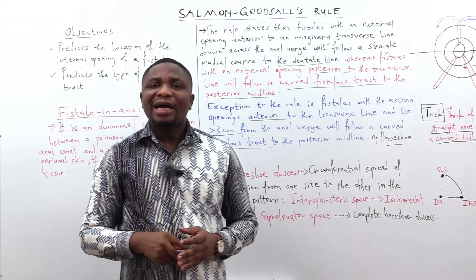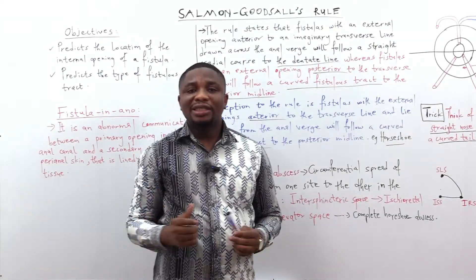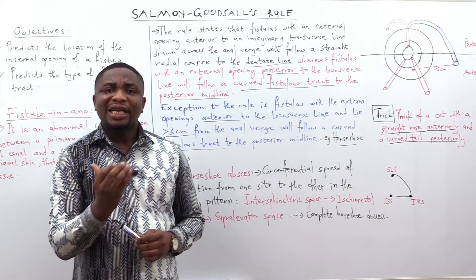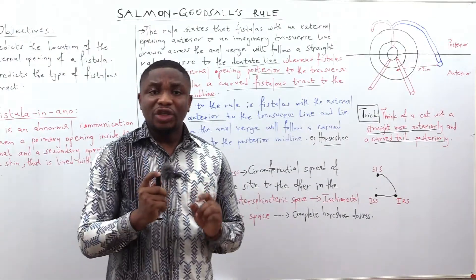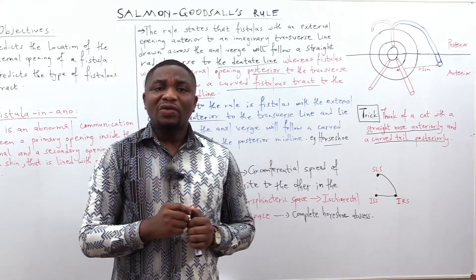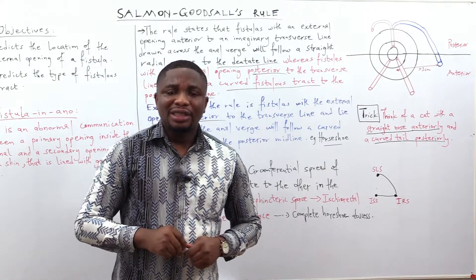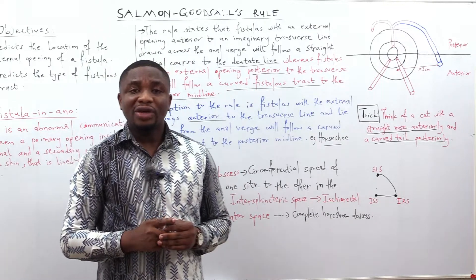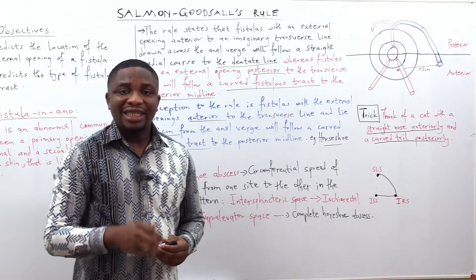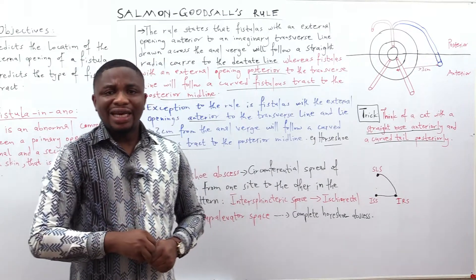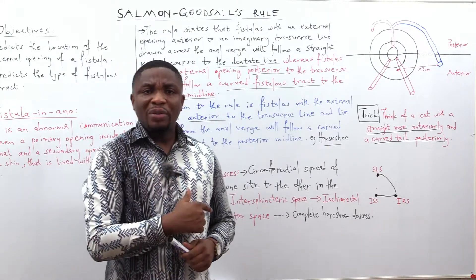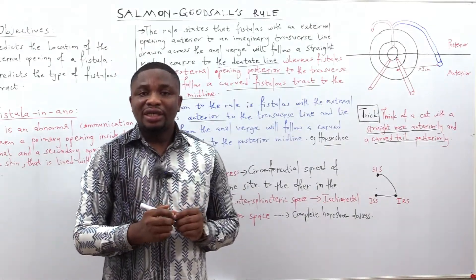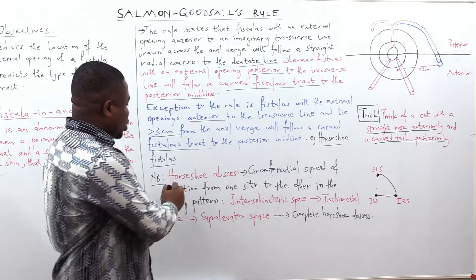What then are the Horseshoe Fistulas? Horseshoe Fistulas will result from a Horseshoe Abscess. When talking about abscess and fistulas, you should know that abscess and fistula are phases of the same disease process — abscess is the acute phase and fistula is the chronic phase of that same disease process. So, to get a fistula, we would have to move from an abscess. For the Horseshoe Abscess, we are looking at a circumferential spread of infection from one side to the other.